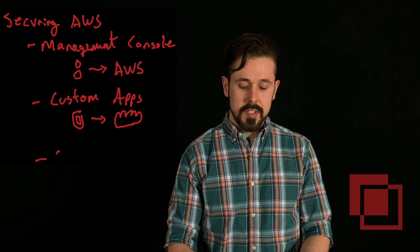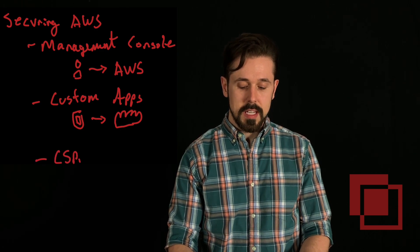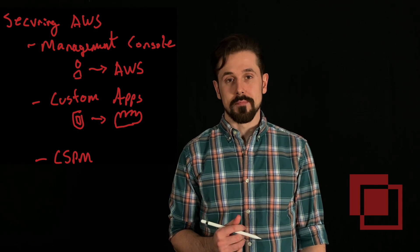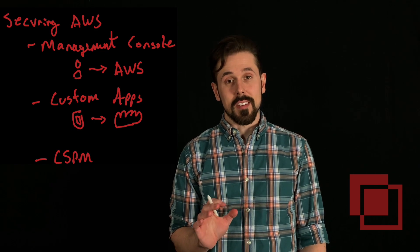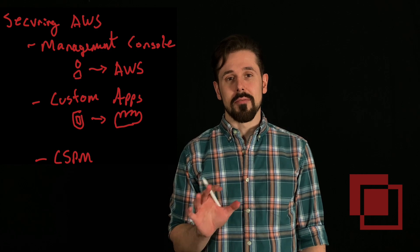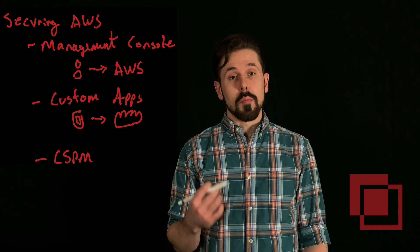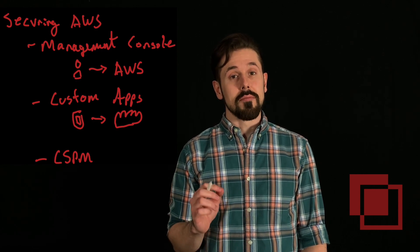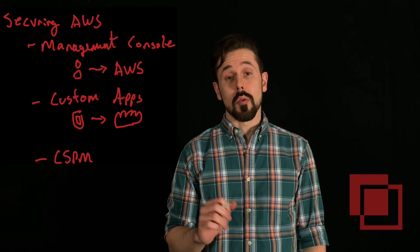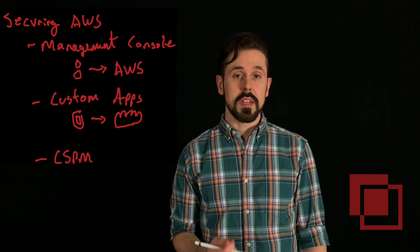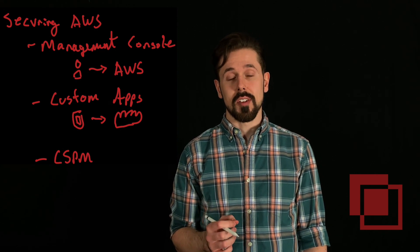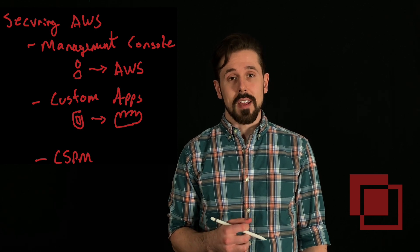Last but not least: CSPM, which stands for Cloud Security Posture Management. Basically, AWS is a big platform that has a lot of different things that you need to configure. And it's possible that if you configure something improperly, it's going to expose the data in your organization. With CSPM, you can detect these misconfigurations and remediate automatically.